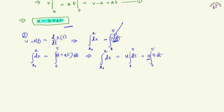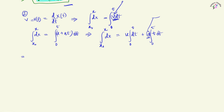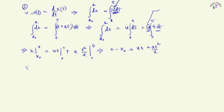We assume that the acceleration is constant. Solving this equation, we get x - x₀ equals ut evaluated from 0 to t plus a·t²/2 evaluated from 0 to t, which gives x - x₀ equals ut plus ½at².